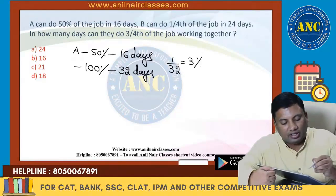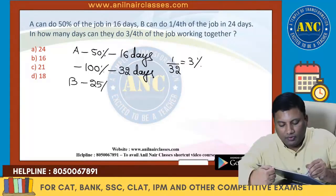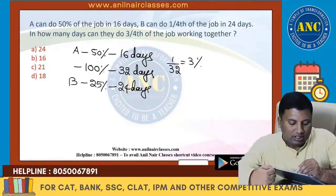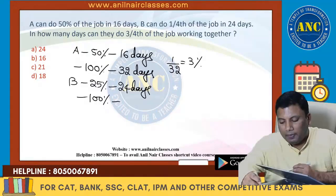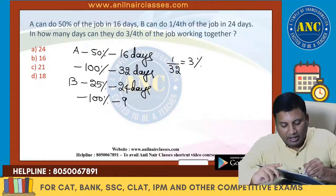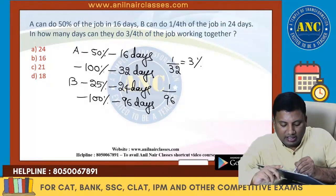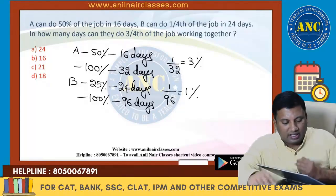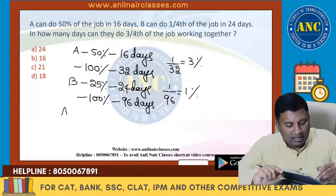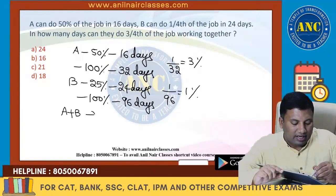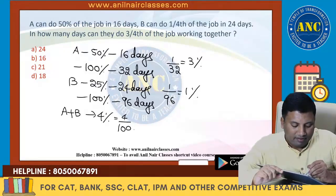B does 25% work in 24 days → 100% in 96 days → rate = 1/96, which is close to 1%. Together A+B give approximately 4% per day. For 75% of work, the answer works out to 18 days. That confirms the answer.